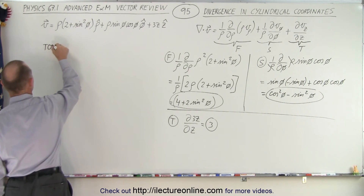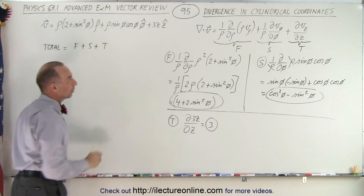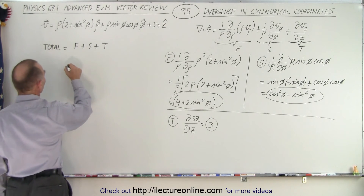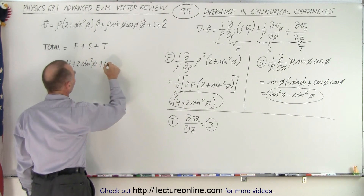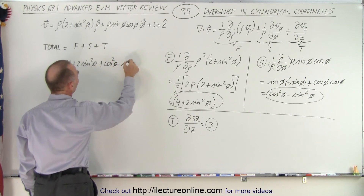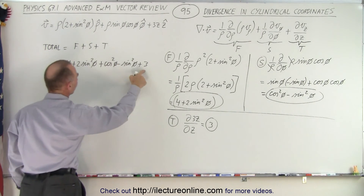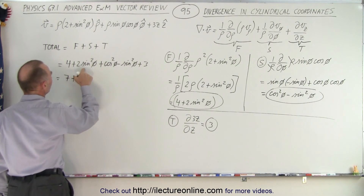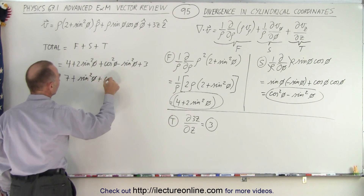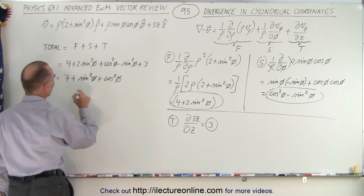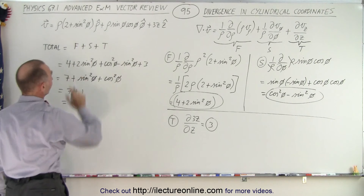Now the total — that's equal to simply the sum of the first, plus the second, plus the third component. So in this case, we end up with 4 plus 2 times sine squared of phi, plus cosine squared of phi, minus sine squared of phi, and then plus 3. This is equal to 4 plus 3, which is 7, plus 2 sine squared of phi minus sine squared of phi gives 1 sine squared of phi, plus cosine squared of phi — and of course those two combine to be 1, so this is 7 plus 1, which equals 8. That is the result of taking the divergence of this particular vector function.